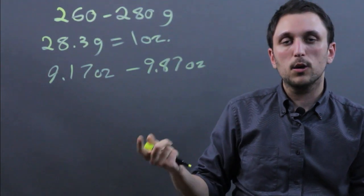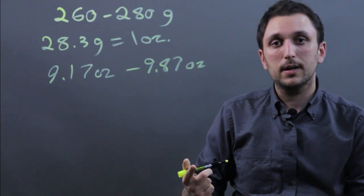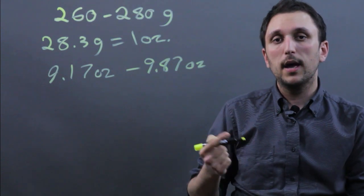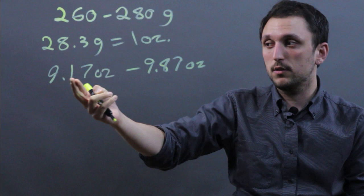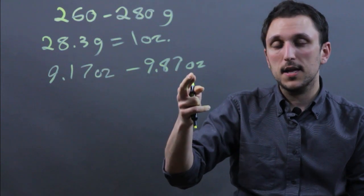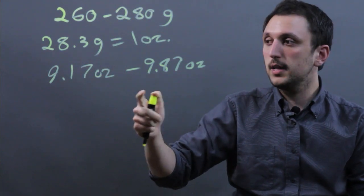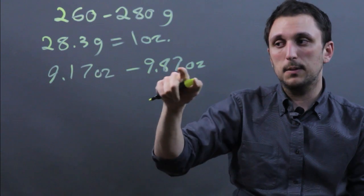So what you'll often hear people say is that a regulation volleyball is between 9 and 10 ounces. However, if it's exactly 9 ounces, it's too light, and if it's exactly 10 ounces, it's too heavy. So it needs to be 9.17 to 9.87.